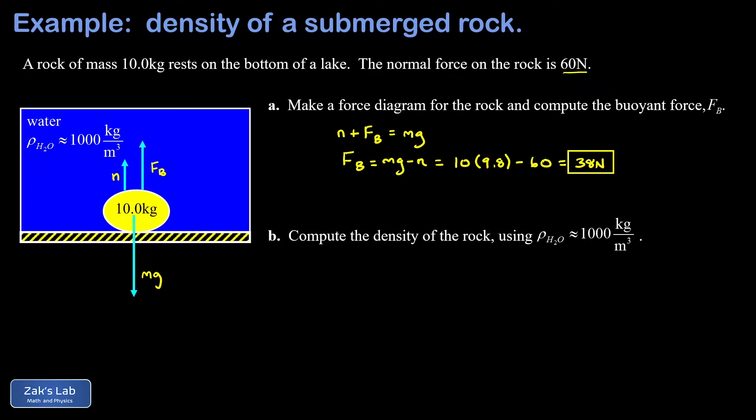So this is 98 newtons minus 60 newtons. In other words, the buoyant force is 38 newtons. Next we want the density of the rock and this is a little bit trickier than part a. We know the buoyant force depends on the volume of the rock because the buoyant force is equal to the weight of the water it displaced by being submerged.